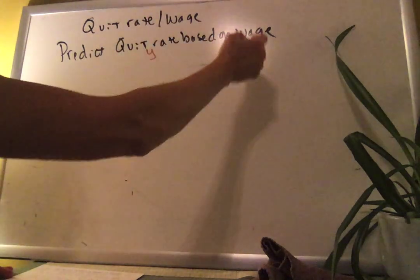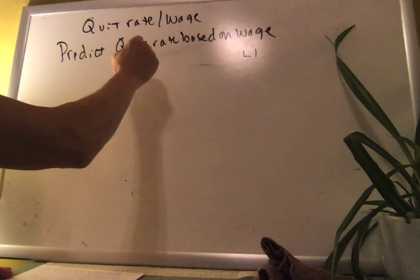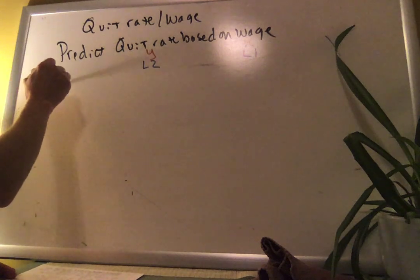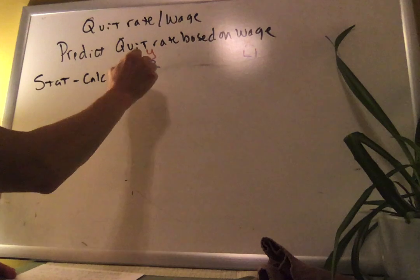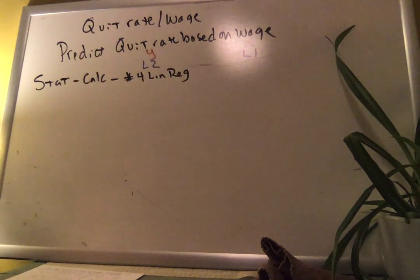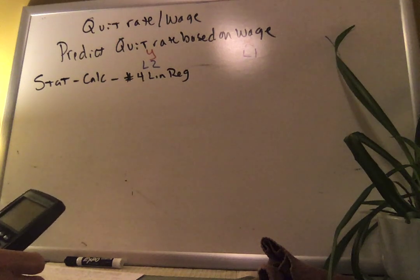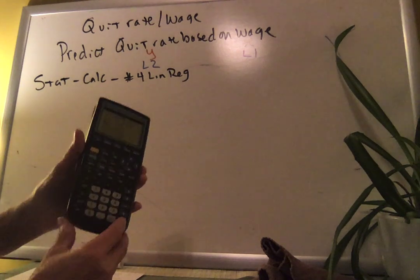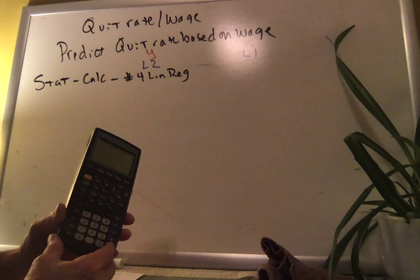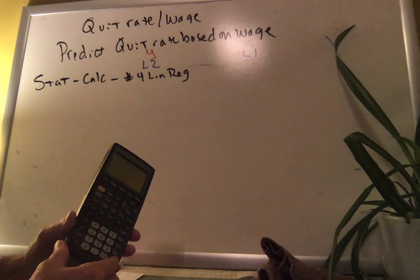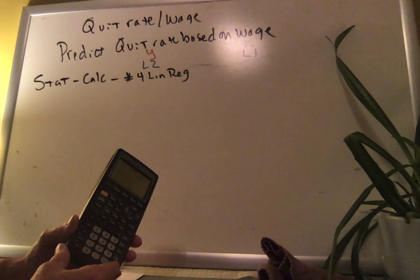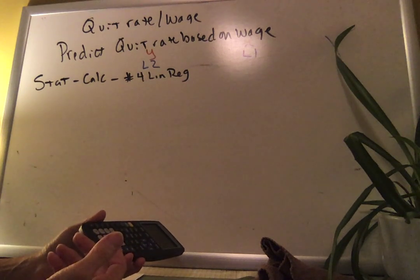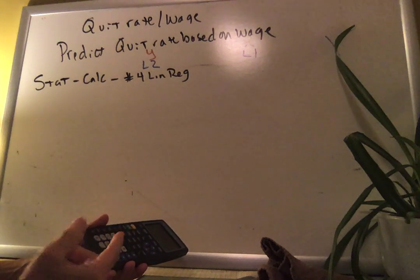You should have put the wages into L1 and the quit rates into L2. Now go to Stat, Calc, choice 4 — it says LinReg. Hit enter exactly one time. A lot of you have a bad habit from high school of hitting enter twice because your teacher knew the default would be fine, but that's not going to work in my class.